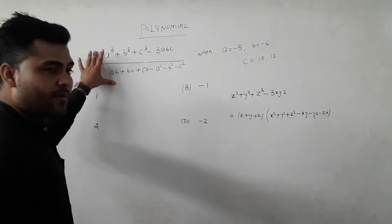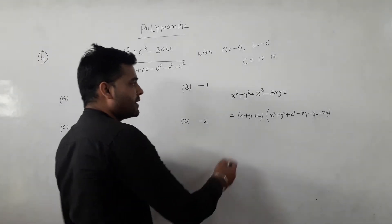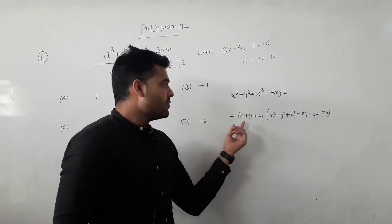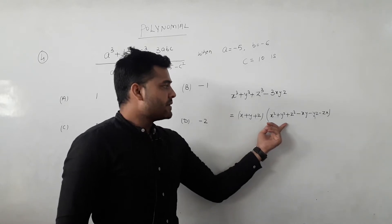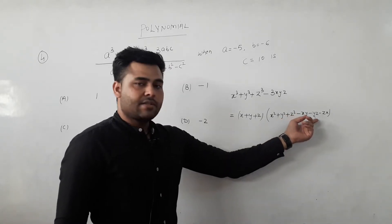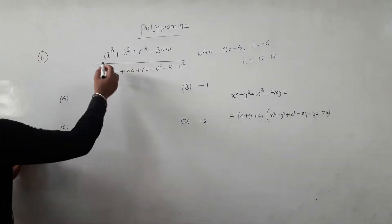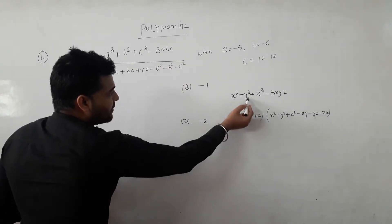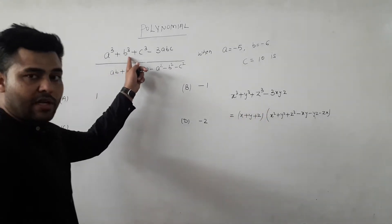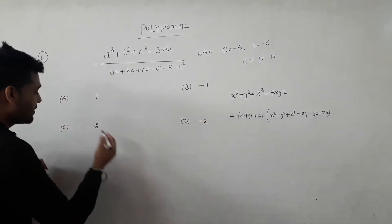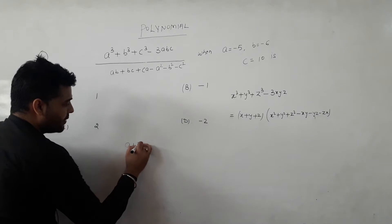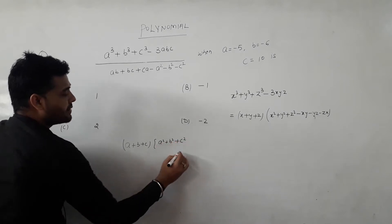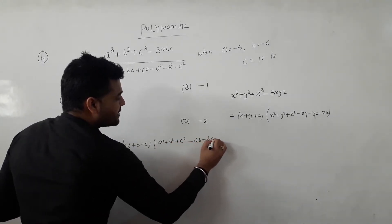So using the principle, this statement is equal to x plus y plus z, all squared, minus xy minus yz minus xz. We change this statement — we can write it as a plus b plus c, times a² plus b² plus c² minus ab minus bc minus ca.